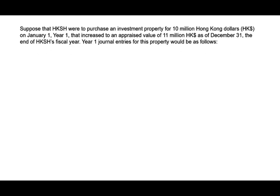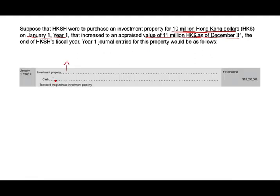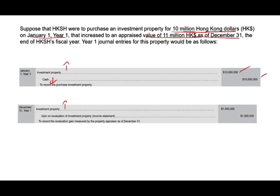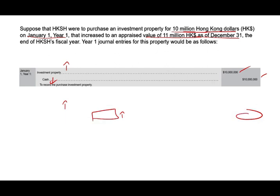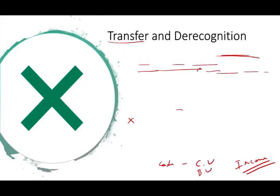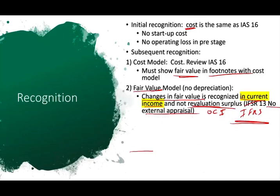Here's a numerical example. Suppose Hong Kong Shanghai purchased an investment property for 10 million Hong Kong dollars on January 1st of year one. That increases to an appraised value of 11 million by year end. When we buy the asset, we increase investment property and reduce cash by 10 million. At year end, we revalue it — investment property goes up by one million, and we report a gain of one million that goes into the income statement. And this, in a nutshell, is IAS 40.